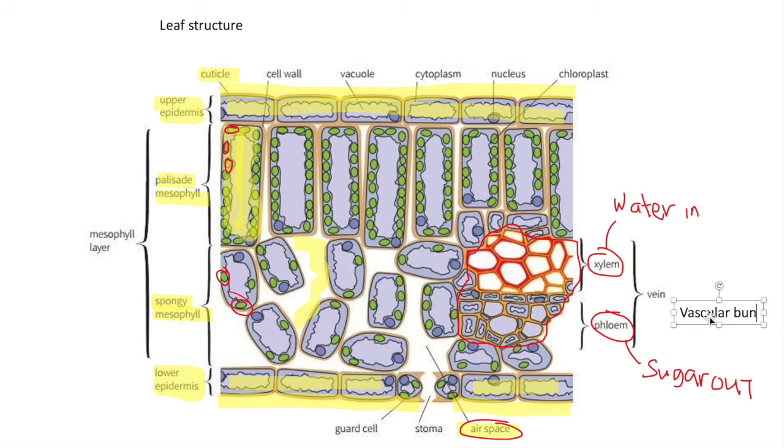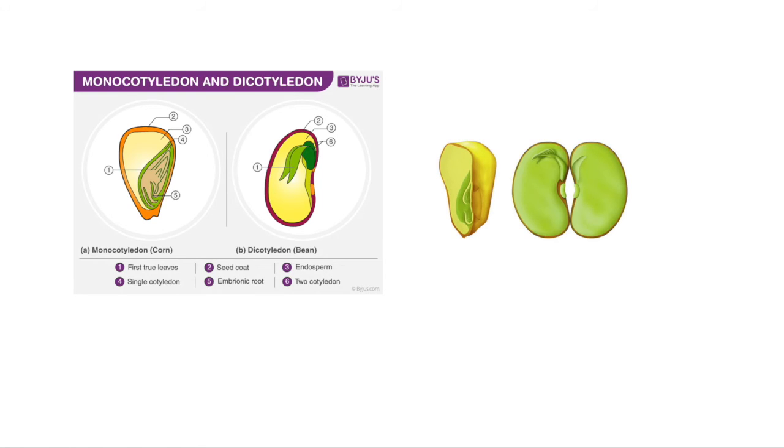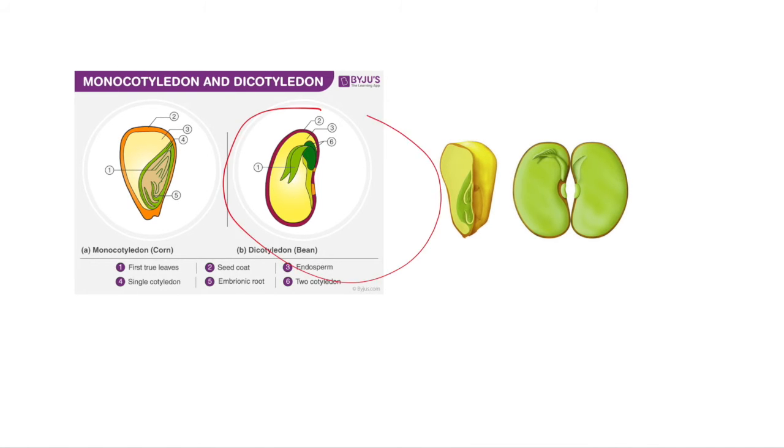This is a common dicotyledonous plant. This vocabulary is just a name of a classification of type of plant, like cats and dogs are classifications of animals. Dicotyledonous plants are ones that produce beans or seeds that have two hemispheres, like red beans or black beans.